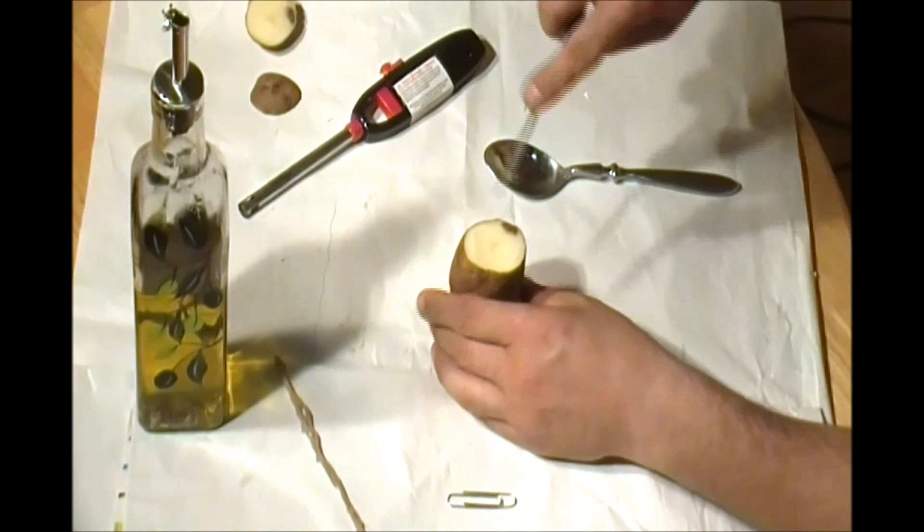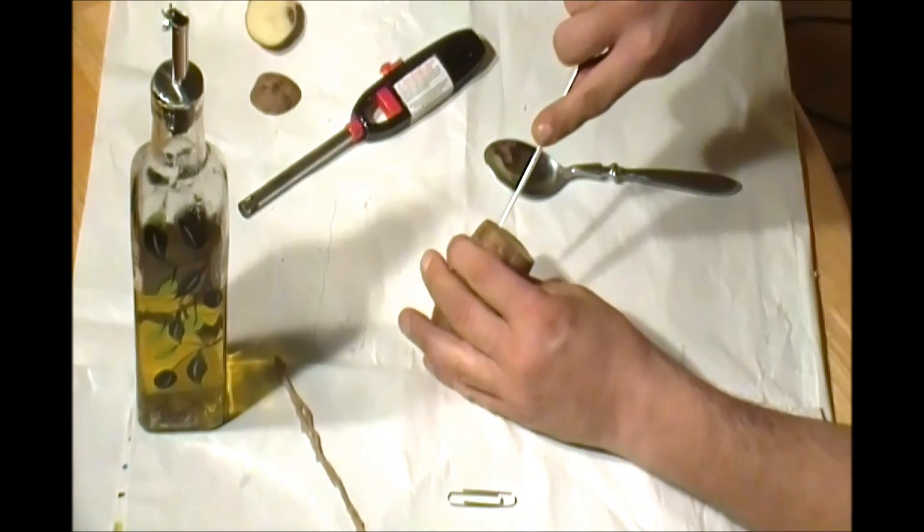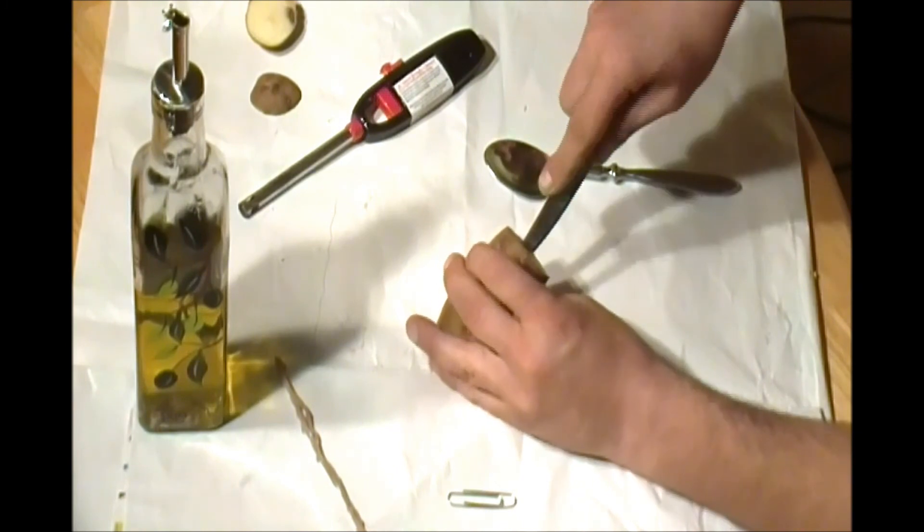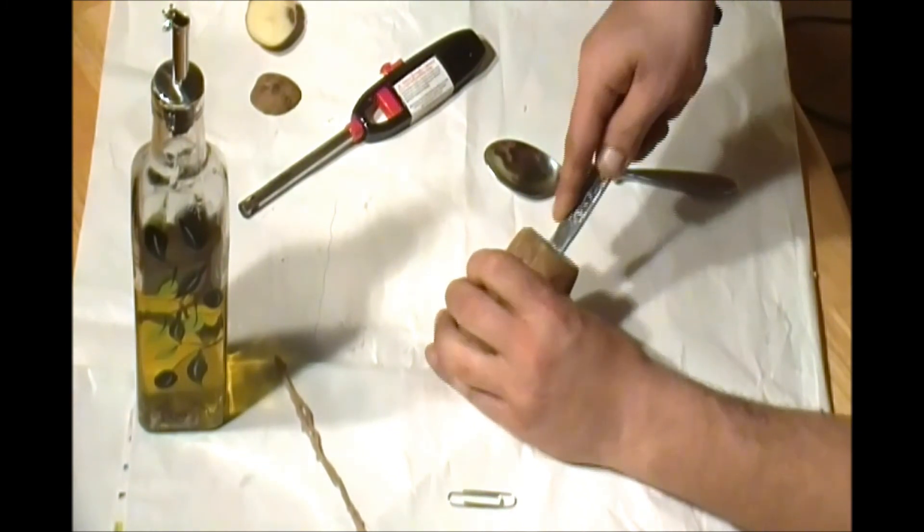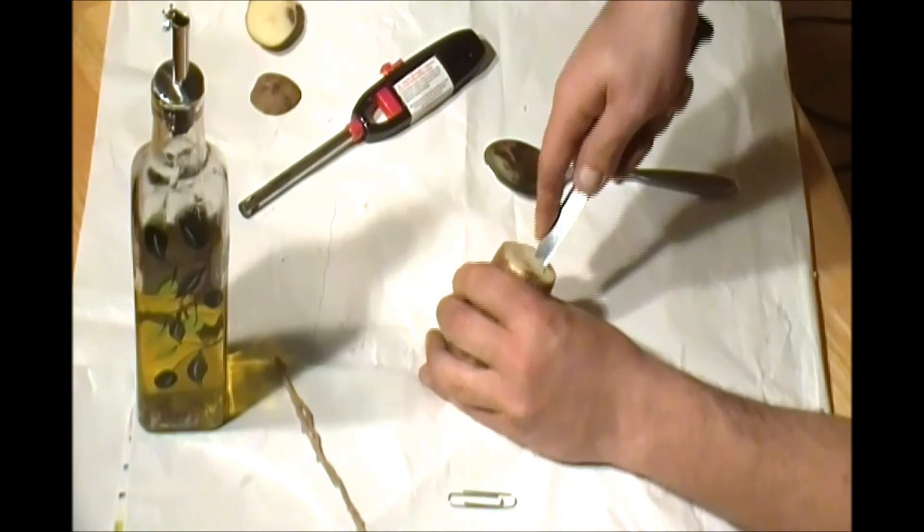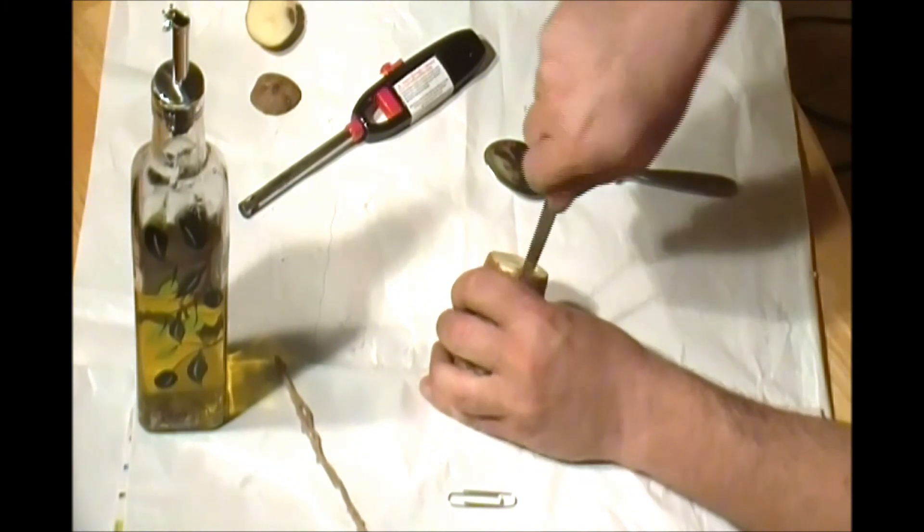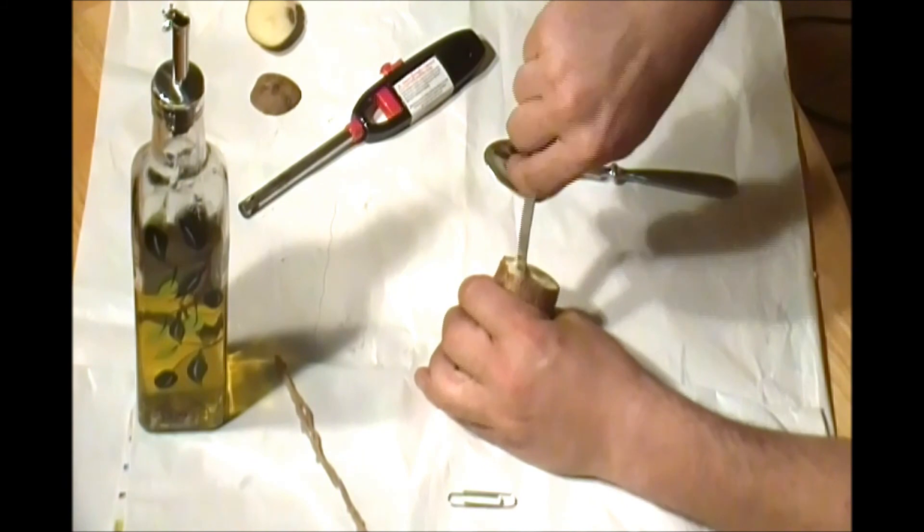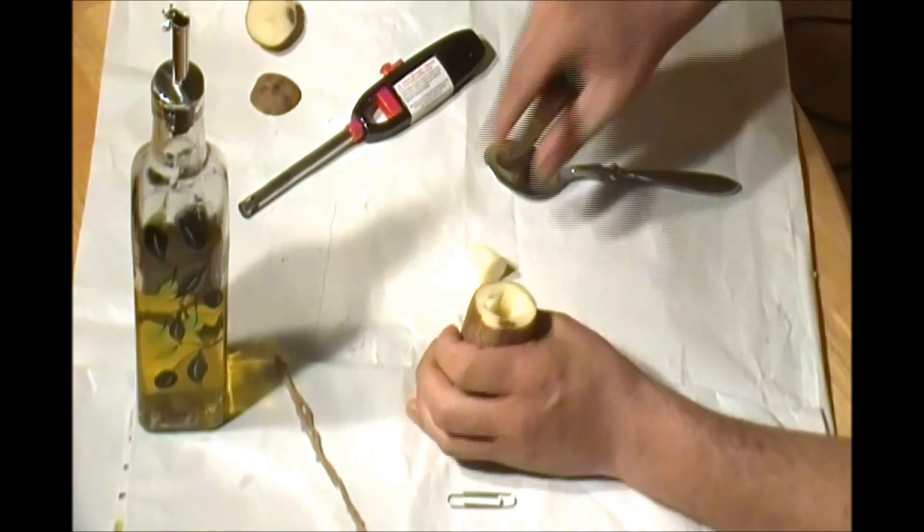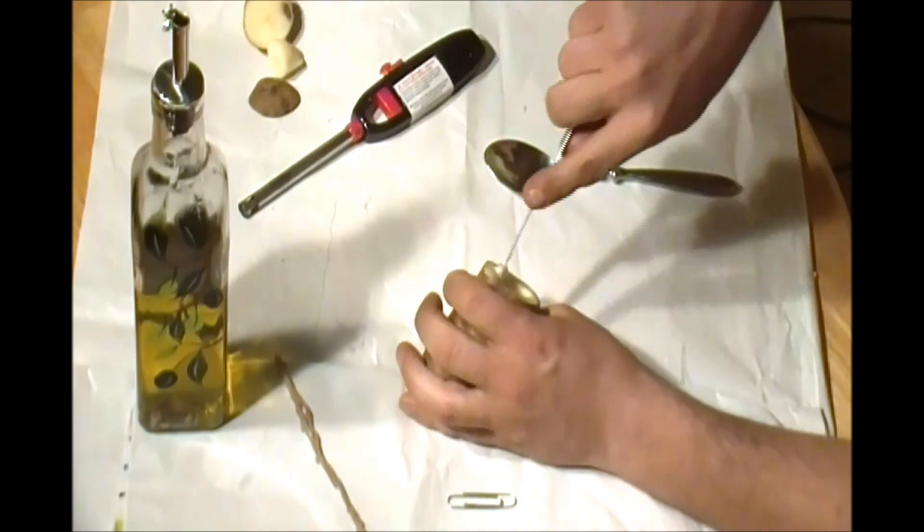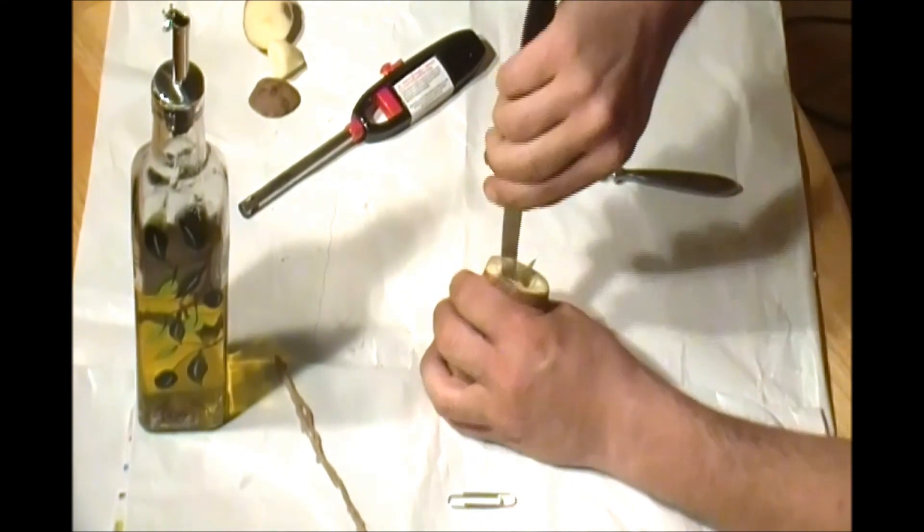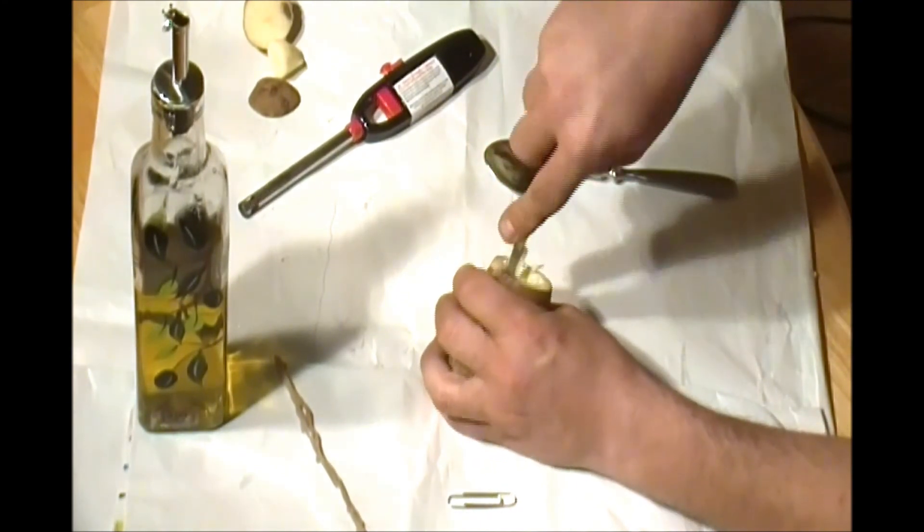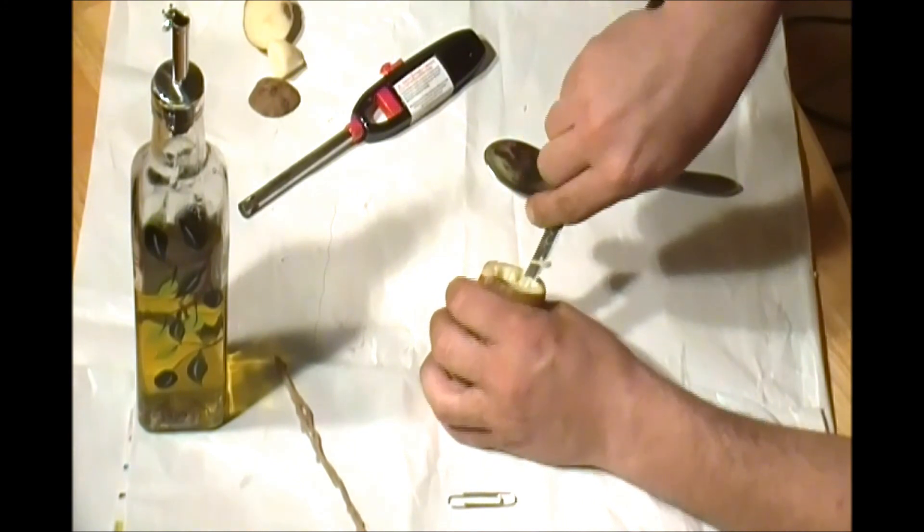After you've done that, start to carve inside the potato a little bit. Make a nice little hole inside the potato so you can feed the oil. Keep doing that until you have a little room inside the potato.